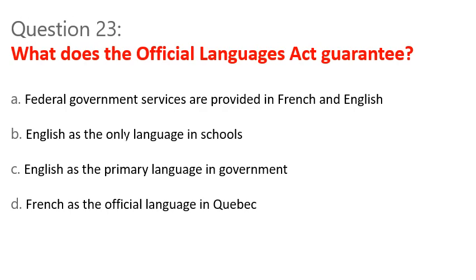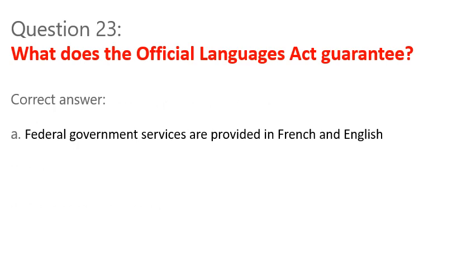Question 23. What does the Official Languages Act guarantee? A. Federal Government services are provided in French and English. B. English as the only language in schools. C. English as the primary language in government. D. French as the official language in Quebec. Correct answer: A. Federal Government services are provided in French and English.